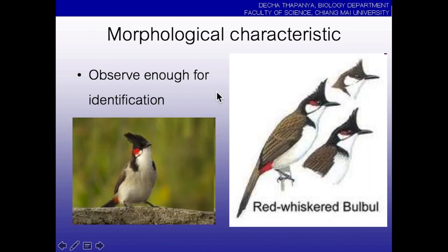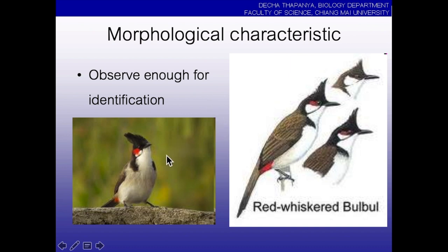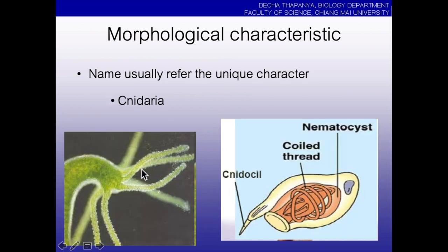For identification of big animals, sometimes we don't need to touch them — like birds. We just only use binoculars or sometimes just photos to identify them. This is the species of red-whiskered bulbul. We just have a picture and we know the species. We use the characters to identify.